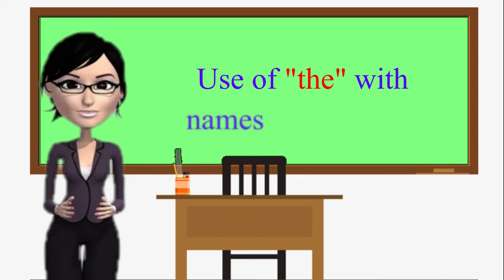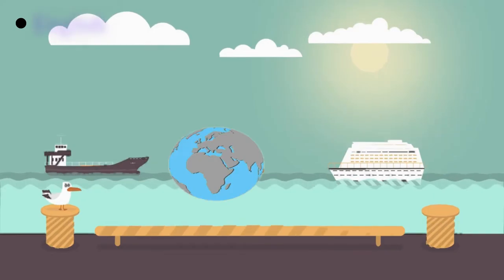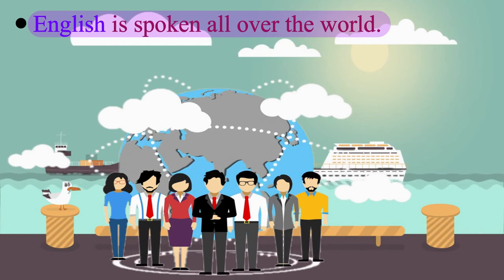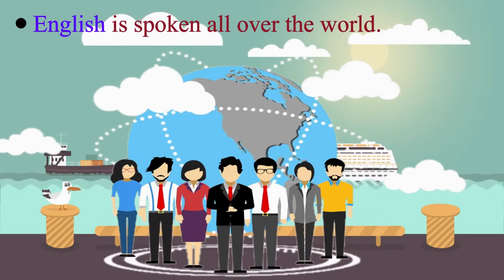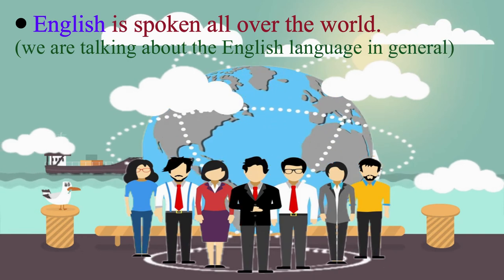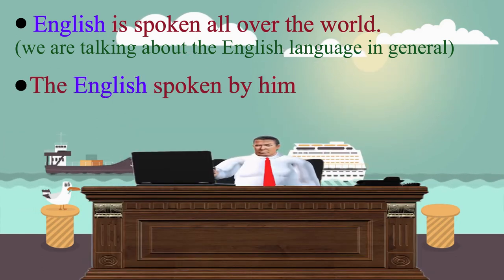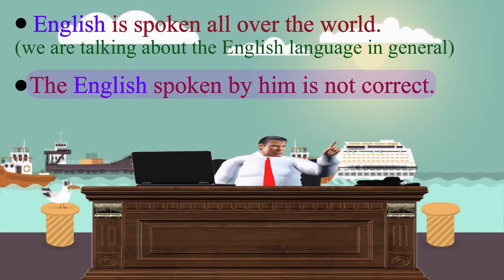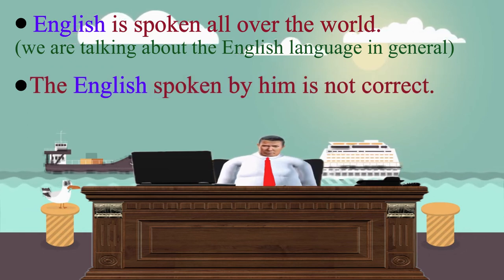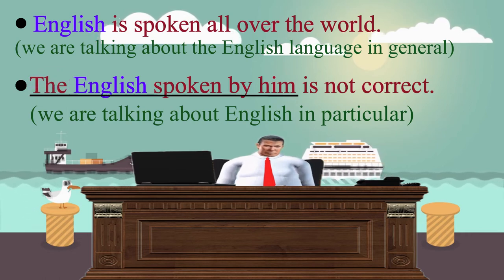Use of 'the' with names of languages. 'English is spoken all over the world.' Here, we do not use an article because we are talking about the English language in general. Now consider: 'The English spoken by him is not correct.' In this sentence, we use 'the' because we are talking about English in particular — the English spoken by him.